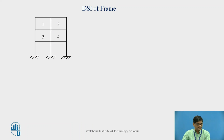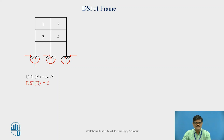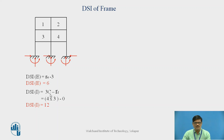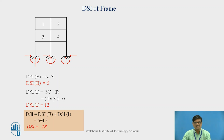Let us proceed to one more example. Following the same steps, the external reactions are total 9, and equations available are 3. So RE minus 3 = 6. As far as internal indeterminacy is considered, we have only loops and no internal hinge, therefore there will be no released reactions. Four loops are there, so 3 into 4 = 12 minus 0. Internal indeterminacy will be 12, and the total degree of static indeterminacy of the given frame will be 18.